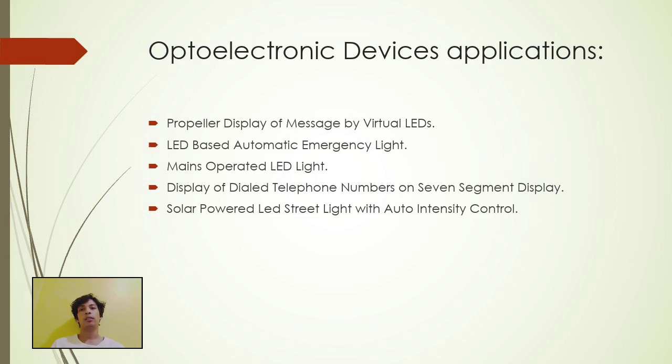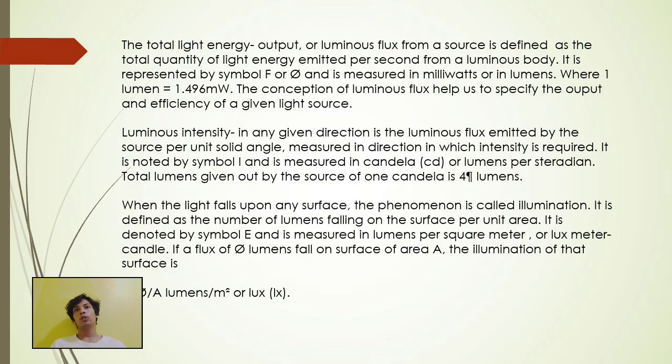Total light energy output or luminous flux from a source is defined as the total quantity of light energy emitted per second from a luminous body. It is represented by symbol F or flux and is measured in milliwatts or in lumens. Where 1 lumen is equal to 1.496 milliwatts, so the conception of luminous flux helps us to specify the output and efficiency of a given light source.